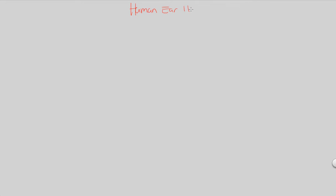So now in this final flowchart, which we'll entitle Human Ear 3, we'll conclude our look at the human ear and finish up this lecture. We're continuing our look through the structure of the human ear. We've gone over the outer ear, the middle ear, and now what's left is the inner ear. The inner ear plays a major role in the overall function of hearing, as we'll see. For the inner ear, take a look at figures 50.11 and also 50.12.